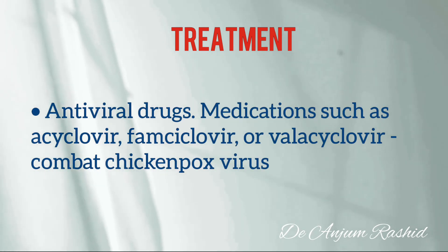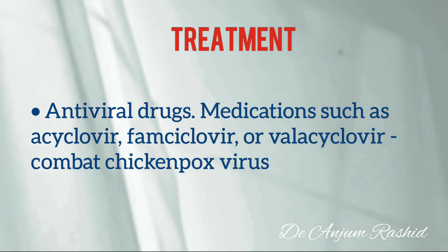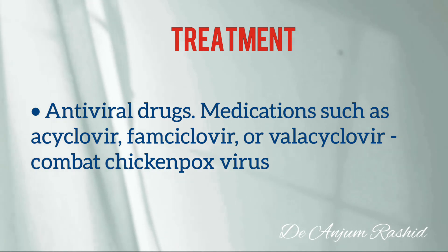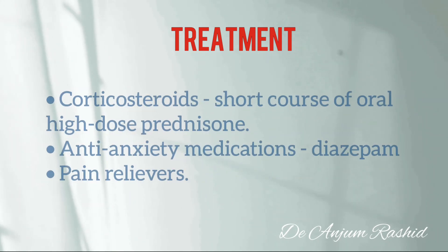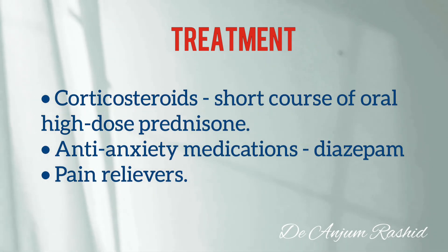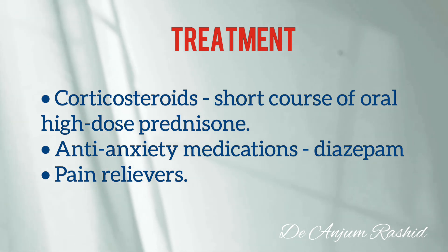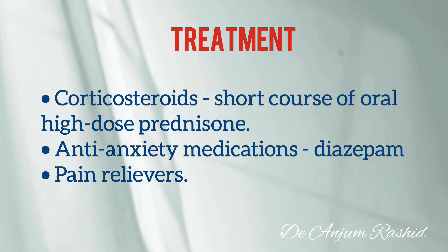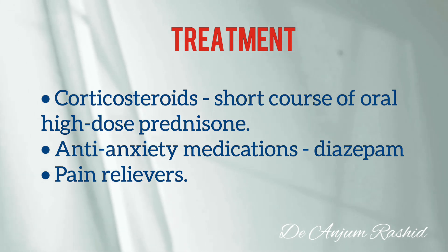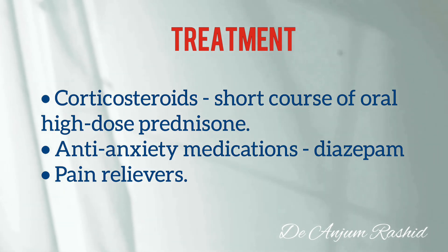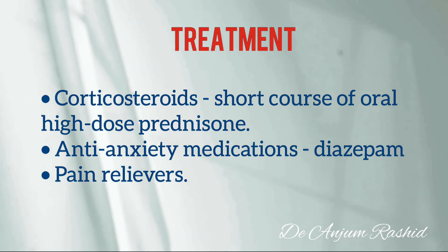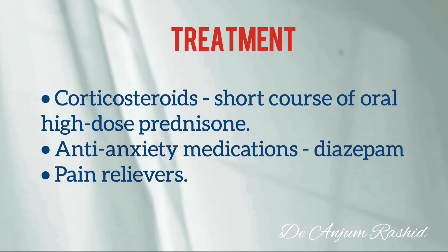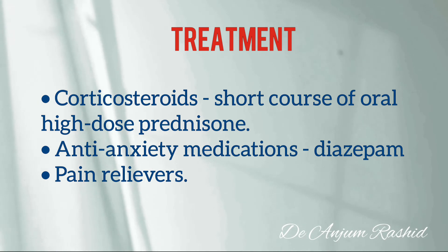Medications may include antiviral drugs such as acyclovir or famciclovir, which help combat the varicella zoster virus. Corticosteroids — specifically a short course of high-dose prednisone — appear to boost the effect of antiviral drugs in Ramsay Hunt Syndrome. Anti-anxiety medications such as diazepam can help relieve vertigo. Prescription pain medication may also be needed, as the pain associated with Ramsay Hunt Syndrome can be severe.